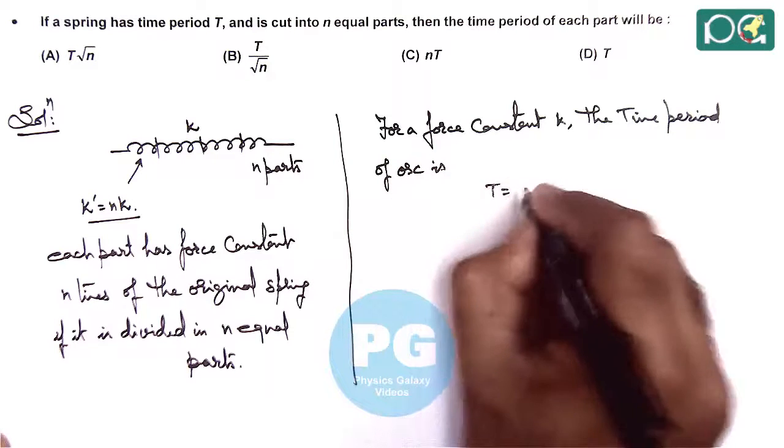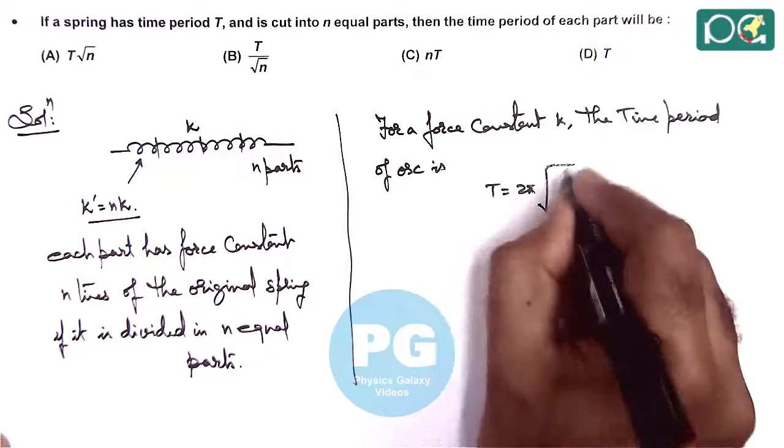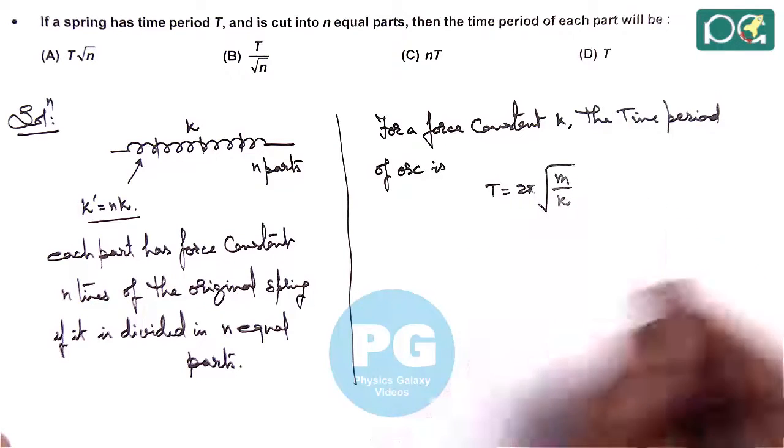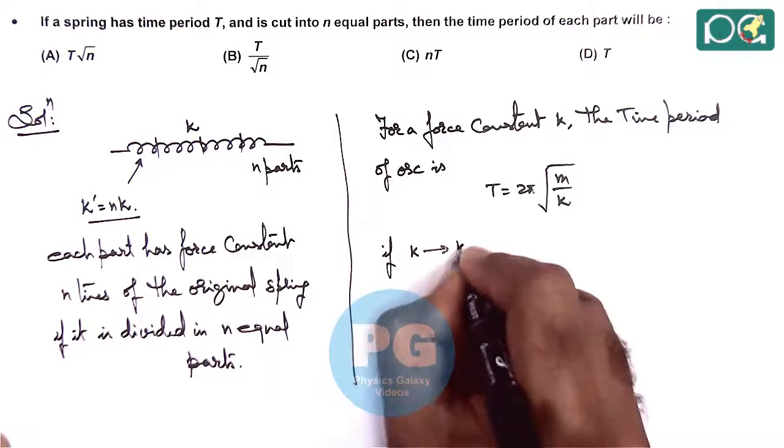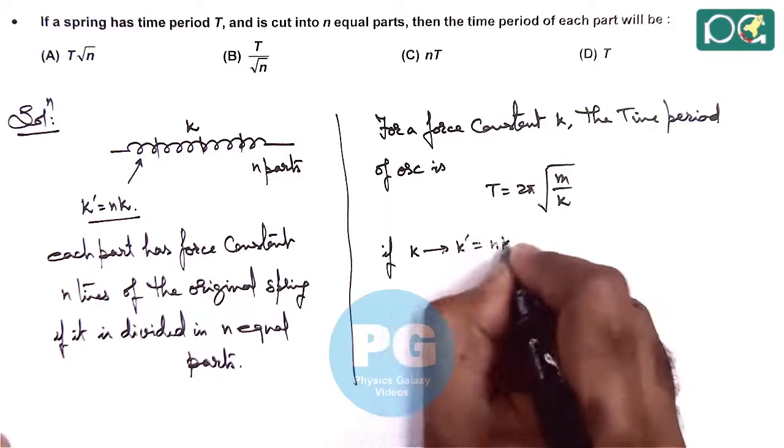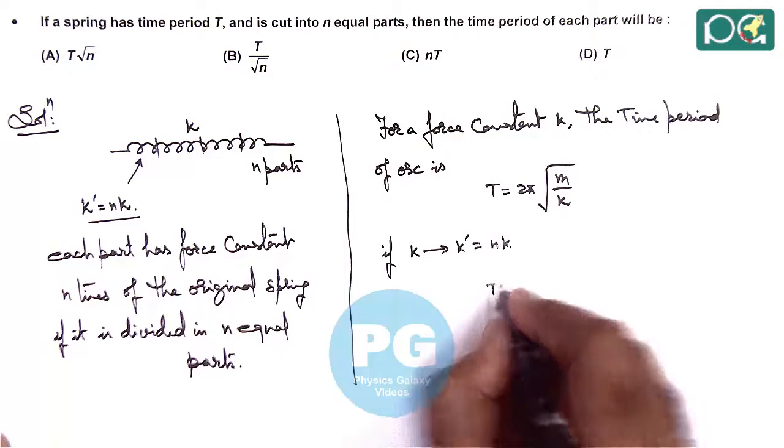Time period we know is given as T equals 2π root of m by k. And if k is changed to k dash which is nk, then the new time period we can write.